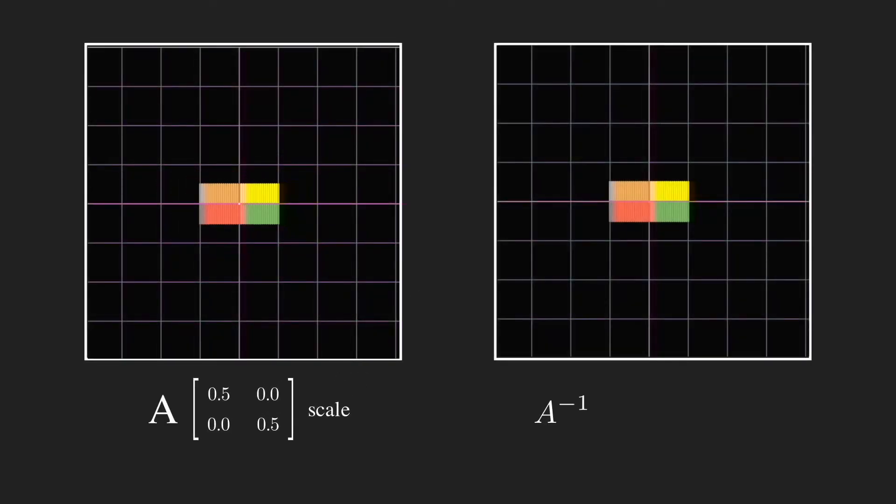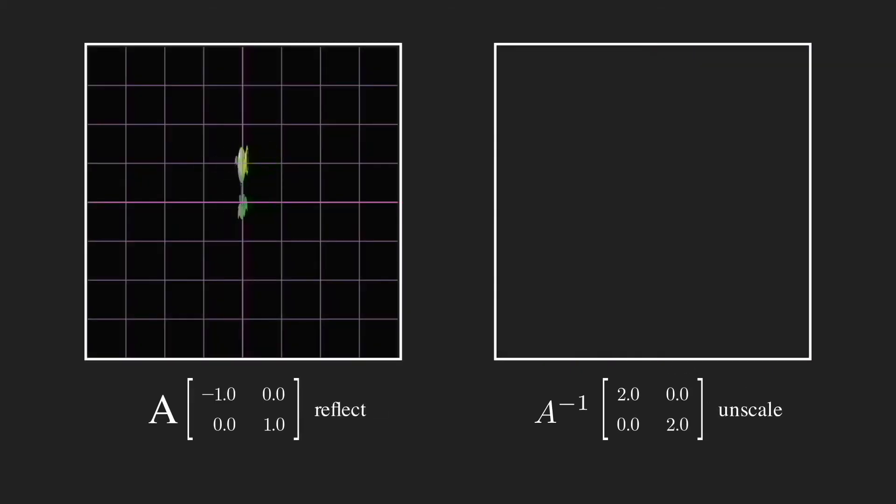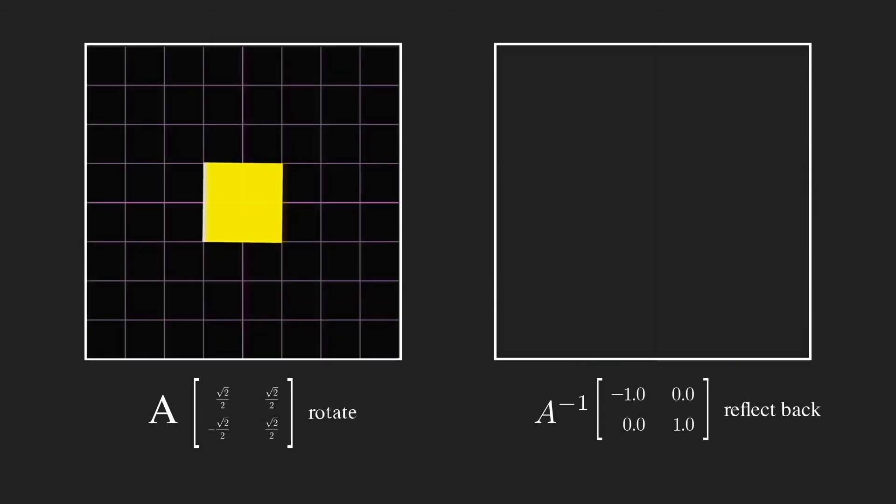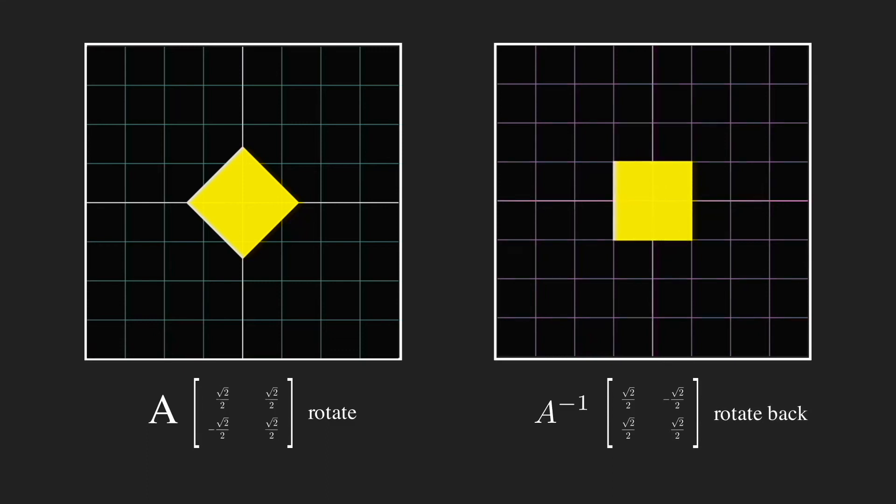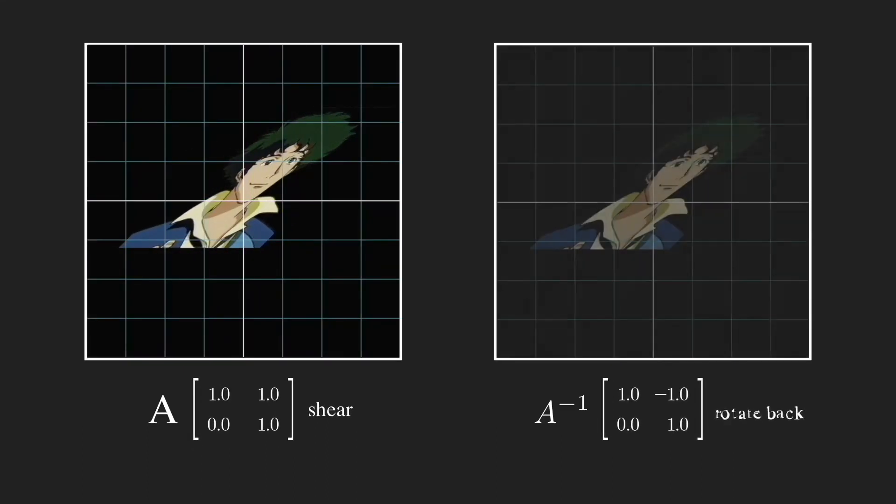For example, the matrix which scales, its inverse matrix unscales. The matrix which reflects, its inverse reflects back. The matrix which rotates, its inverse rotates back. The matrix which shears, its inverse unshears.